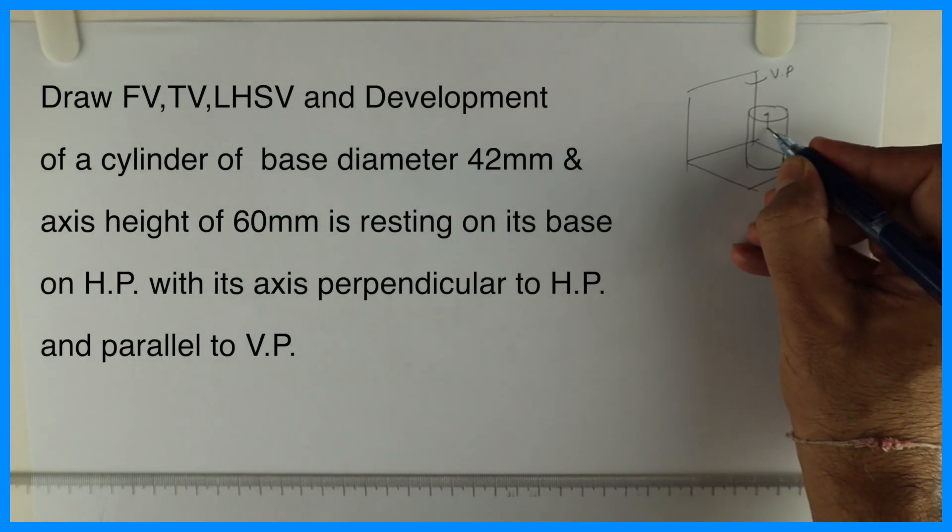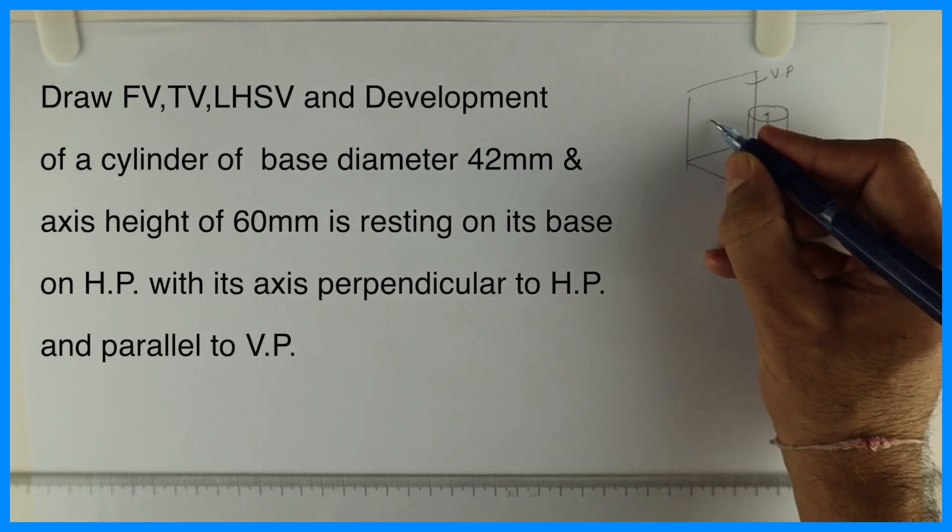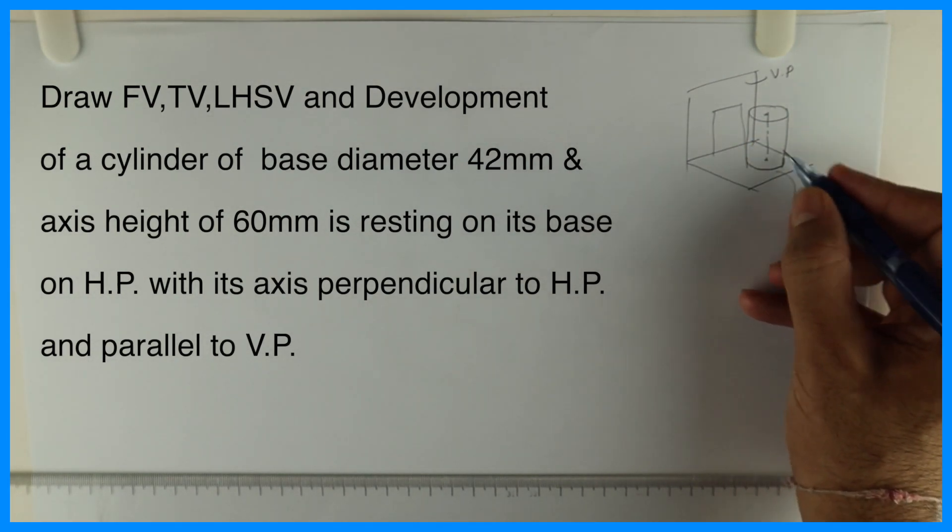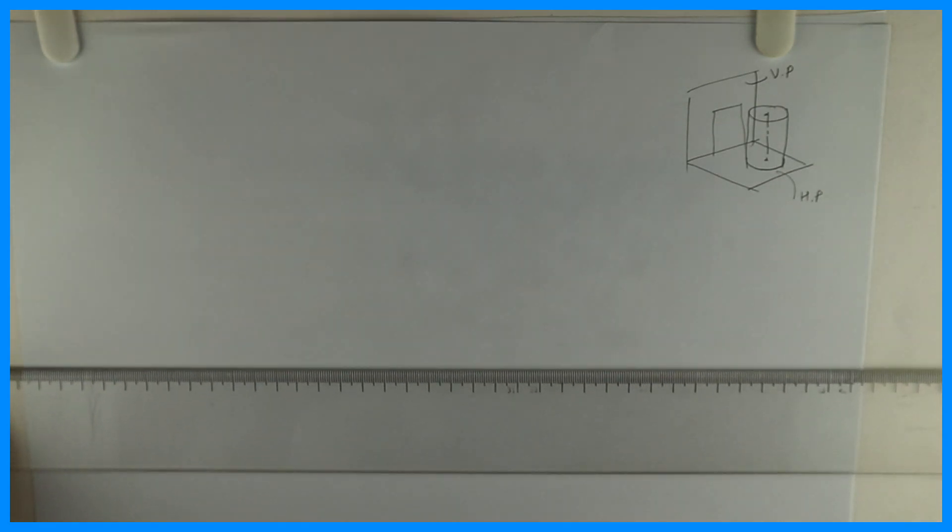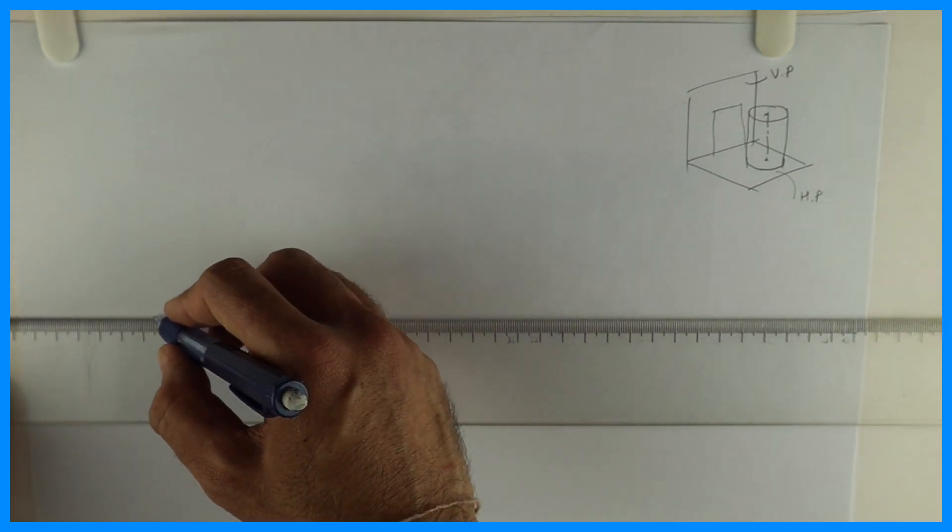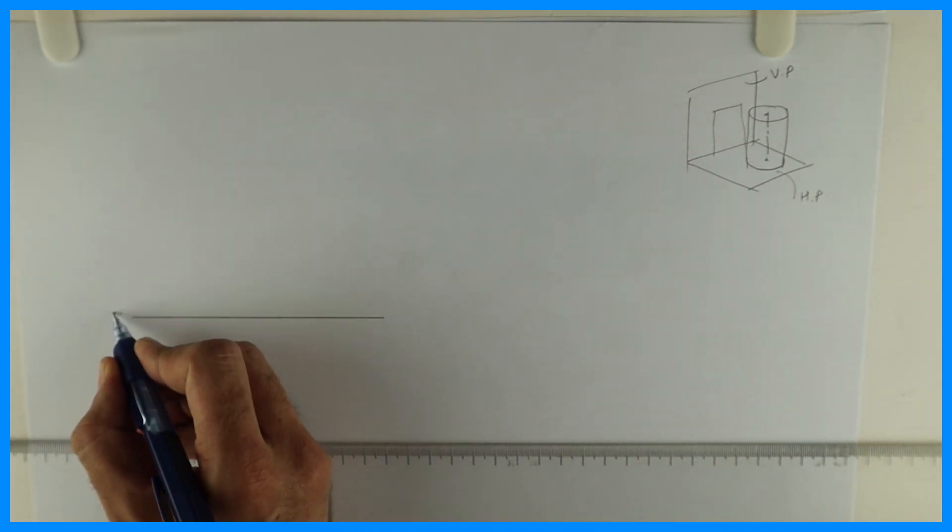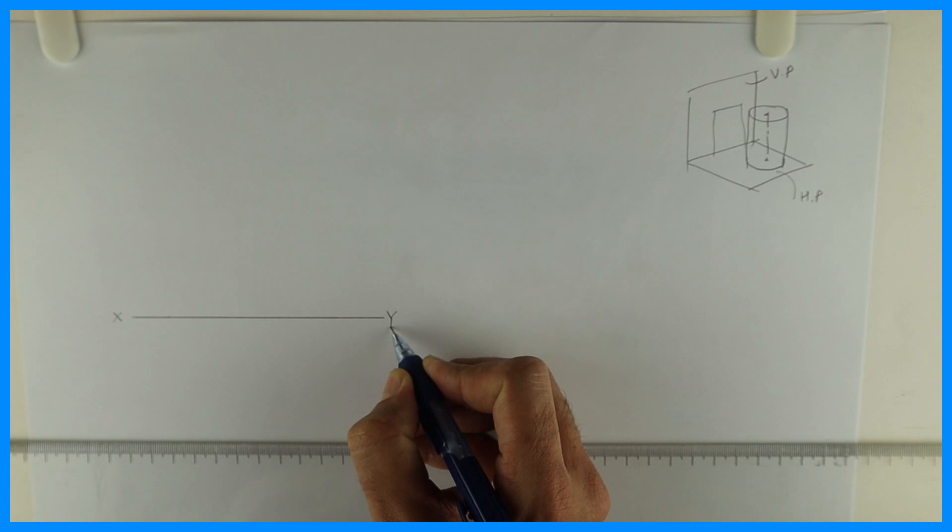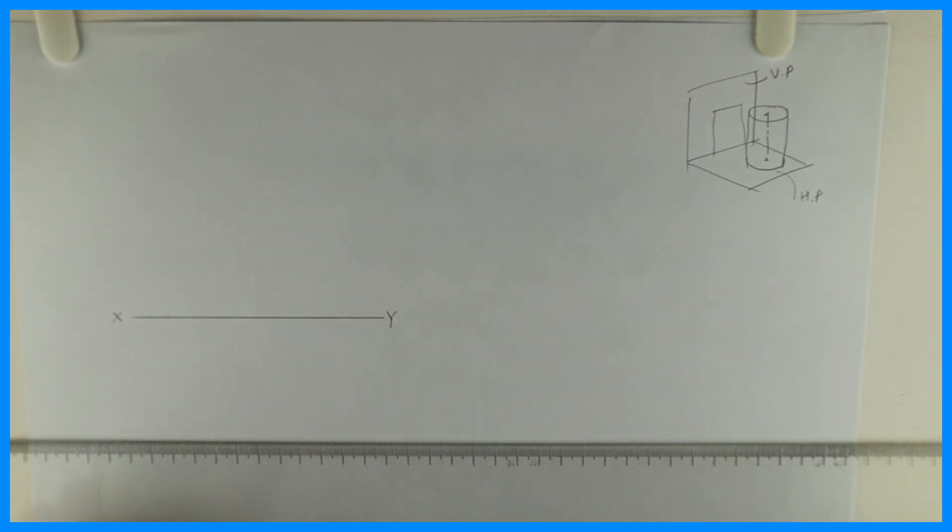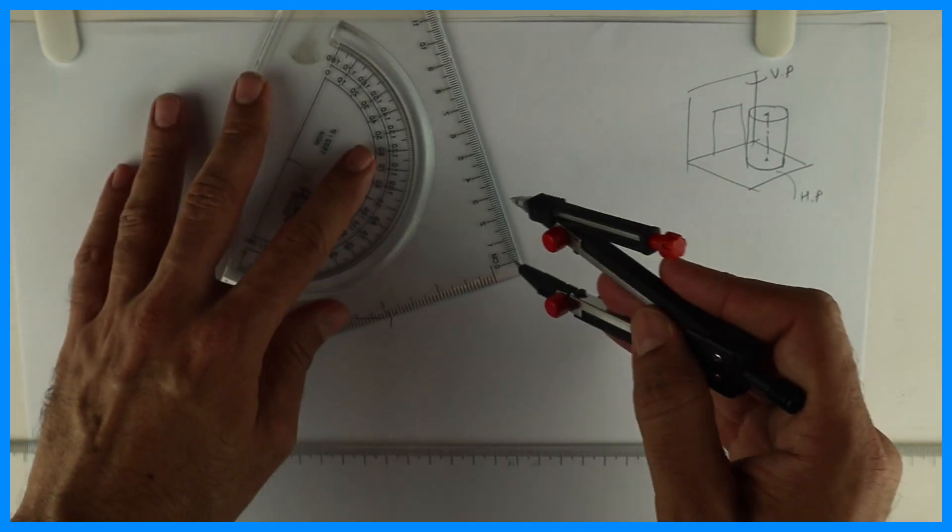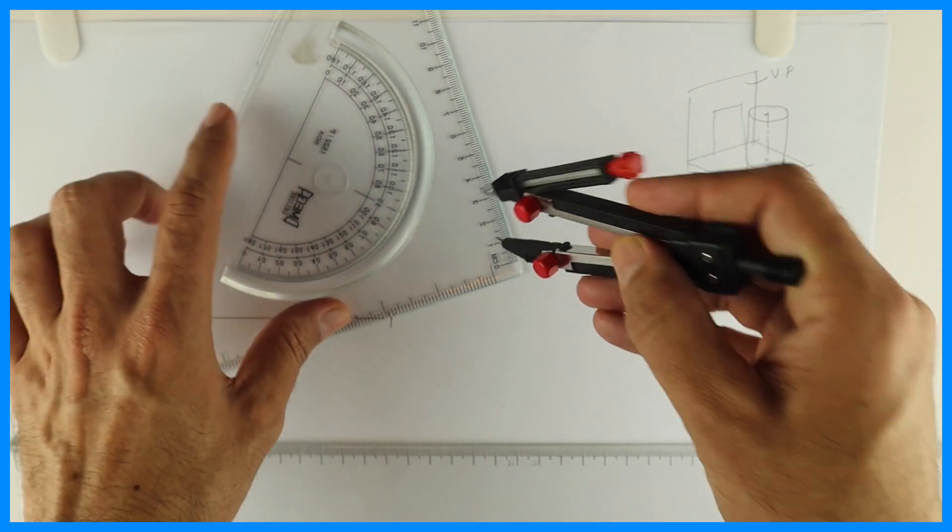So when you see in the front view you'll see rectangle. In top view you'll see true shape. So we'll start with top view. Always remember, whenever they say axis perpendicular to HP, we'll start with top view. True shape will be in top view, what I mean by true shape - circle.